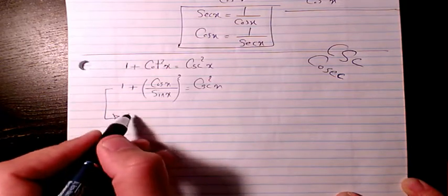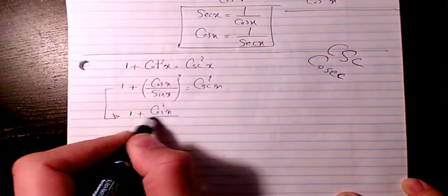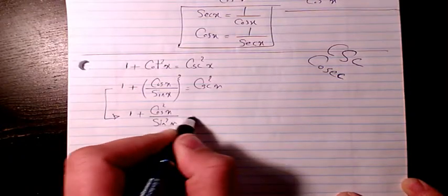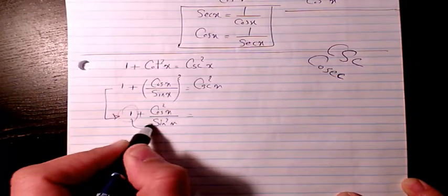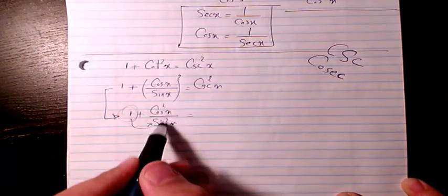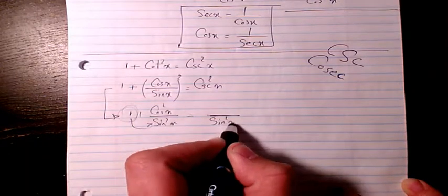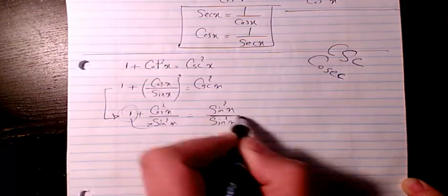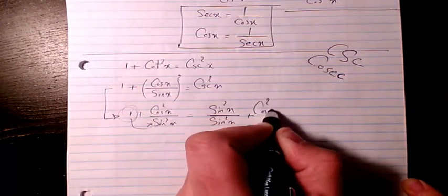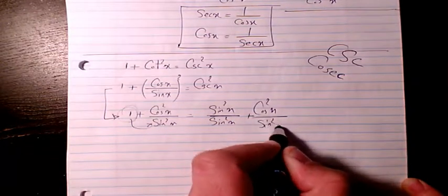I will have 1 plus cosine squared x divided by sine squared x. I want to make it so that it has the same denominator like sine squared, so it's going to be sine squared x both in numerator and denominator. So it becomes sine squared x plus cosine squared x divided by sine squared x.